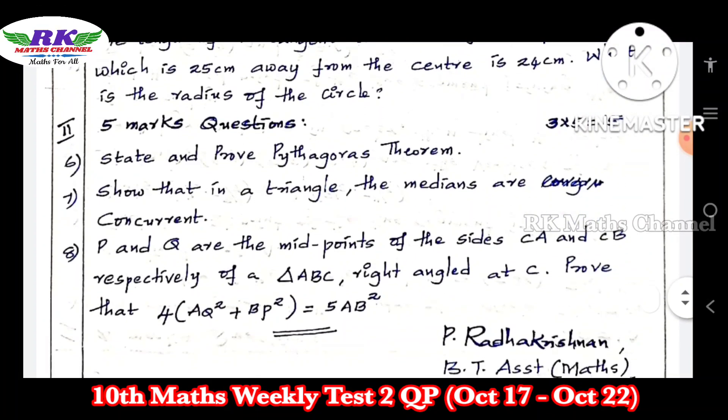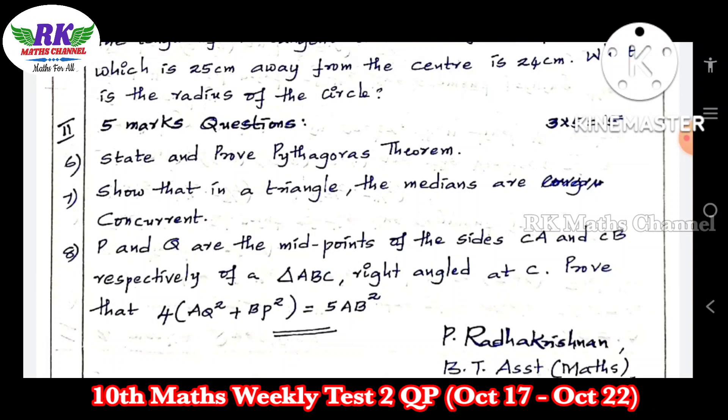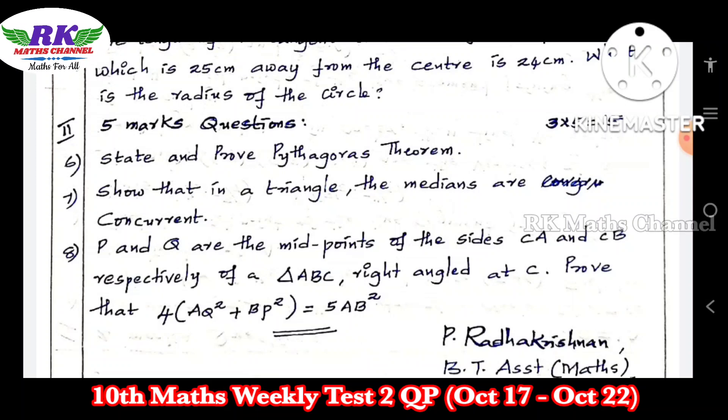The next 5-mark questions: 3 questions, 3 fives are 15 marks. Very important question: first one — state and prove the Pythagoras theorem.